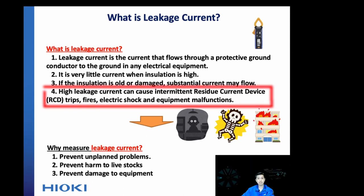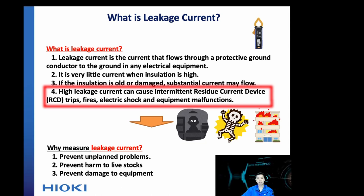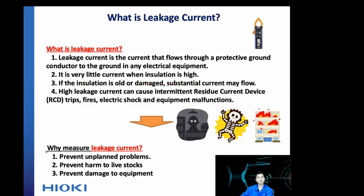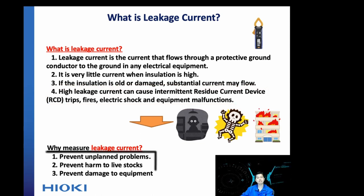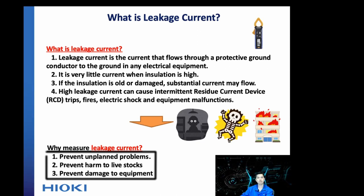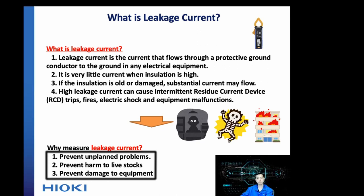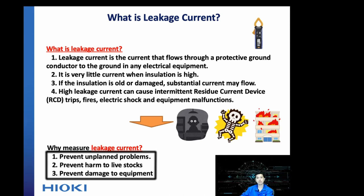In the worst case, it may cause fire, threaten the lives of people, and damage equipment. So ultimately, we need to use a leakage clamp meter to detect where the source of the leakage current is, so as to prevent unplanned power interruption, prevent harm to people, and damage to equipment.